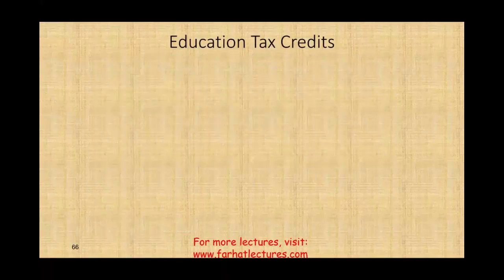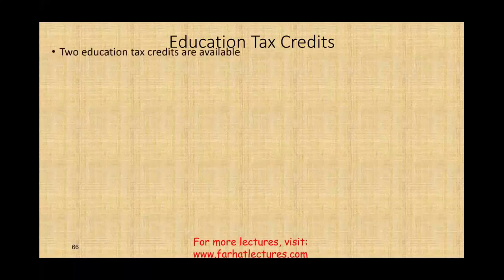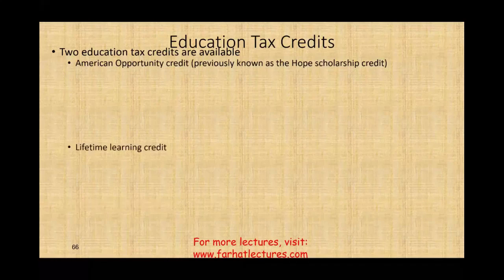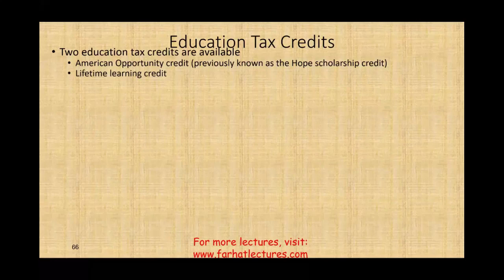Let's talk about education tax credit. We have two types of education tax credit available: the American Opportunity Credit, also known as the Hope Scholarship Credit, and the Lifetime Learning Credit. Think of 'lifetime' — you could always have the Lifetime Learning Credit at any point in your life. The American Opportunity Credit covers the first four years of college, and once you use it up, the Lifetime Learning Credit is always available to you.